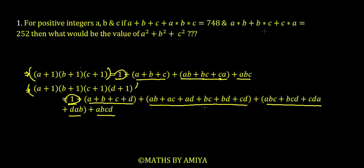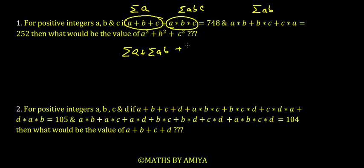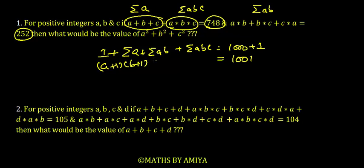Now solve question number 1. We have A + B + C, means we have sigma A. We have ABC, means sigma ABC. We have AB + BC + CA, we have sigma AB. If we add all three, if we add these two expressions, we have sigma A plus sigma AB plus sigma ABC. The LHS becomes this and the summation of 748 and 252 is 1000. But we know for factorization, we need to add extra 1 to both sides. After adding extra 1s, RHS becomes 1001, and this becomes (A+1)(B+1)(C+1).